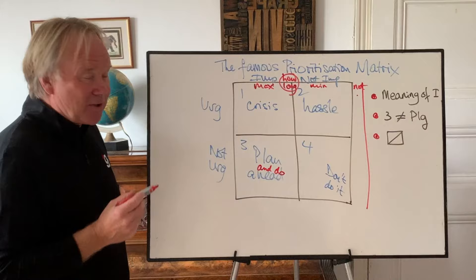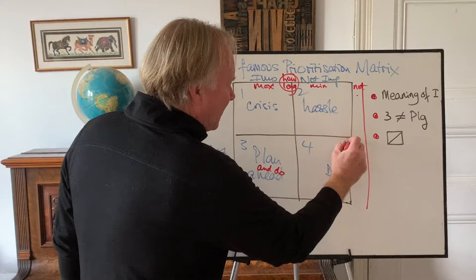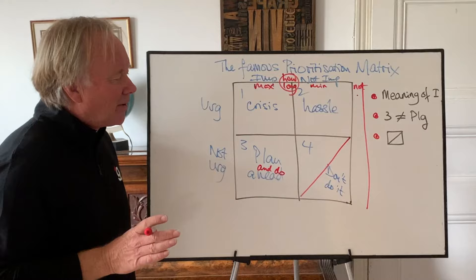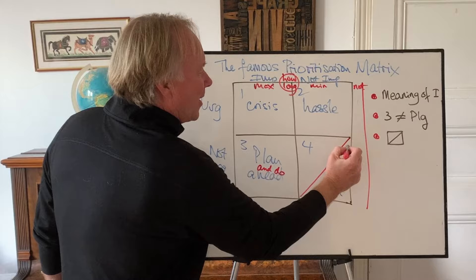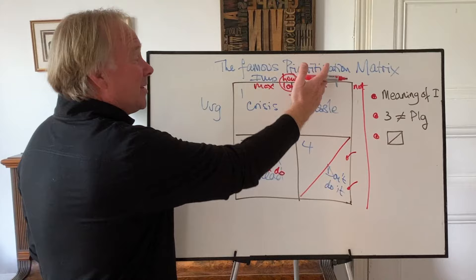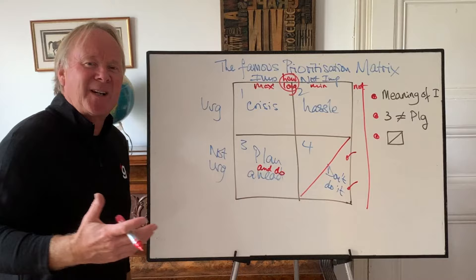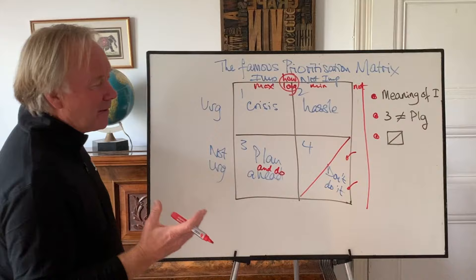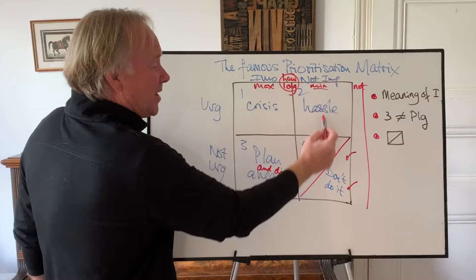The final distinction is I want to divide box four in half. Box four is not just don't do it. There's a whole load of stuff in box four that you do have to do. Something like buying food — it's not important, it's not something we want to spend our life doing. We don't have a life goal to maximise time in the supermarket. So buying food, housework, cleaning — that sort of thing has to be done, but with minimum time. It sits in this column and it's not urgent.